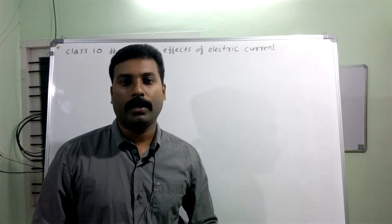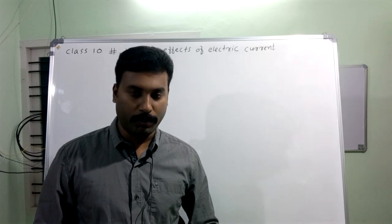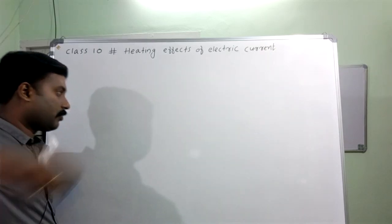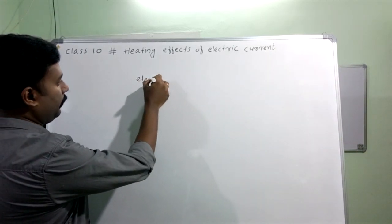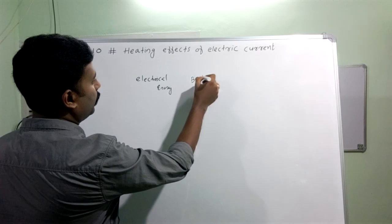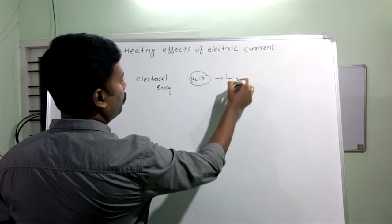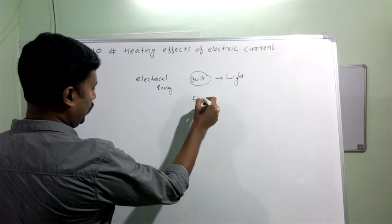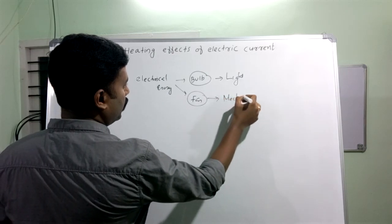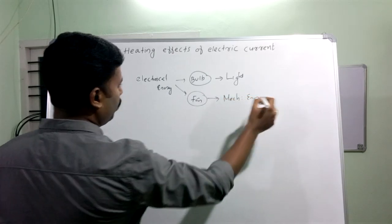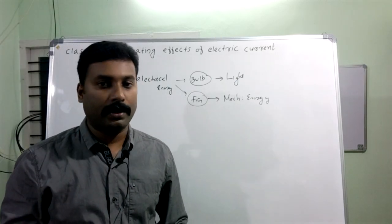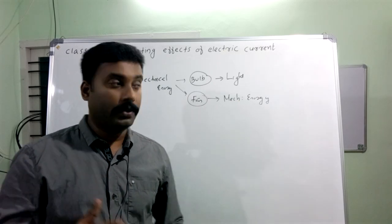We can use energy and transmit it from one form to another. We have to transmit electrical energy — for example, a bulb converts electrical energy to light energy. An electric fan converts electrical energy to mechanical energy. There are different forms to which electric energy can be converted, and this is the advantage of electric energy.